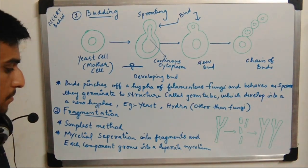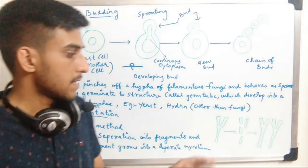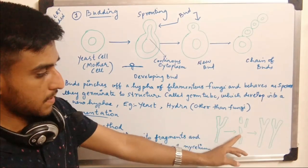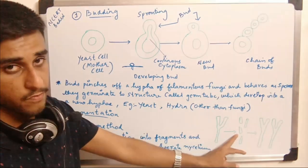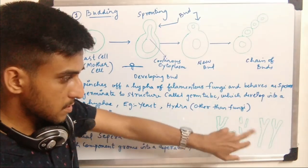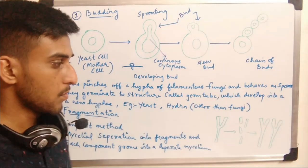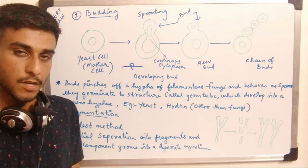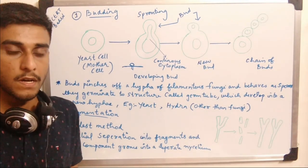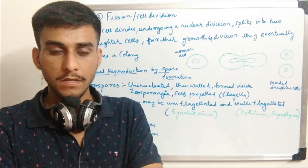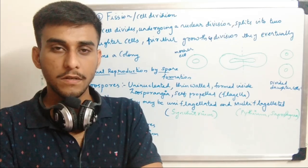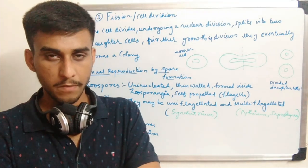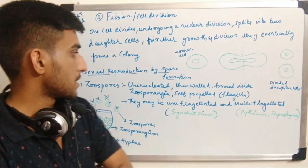Mycelial separation into fragments occurs, and each fragment grows into a separate mycelium. Here the hyphae break down due to some forces, and each fragment will grow into an entire new fungi. This is the simplest method of asexual reproduction.